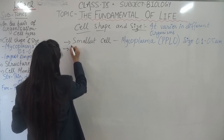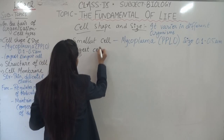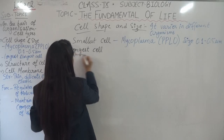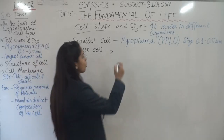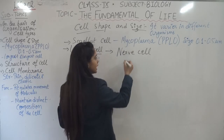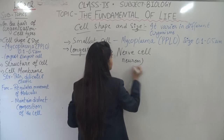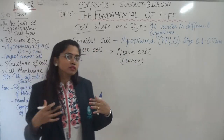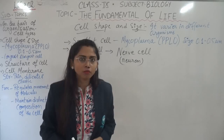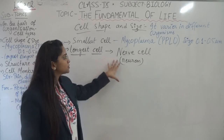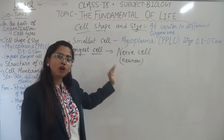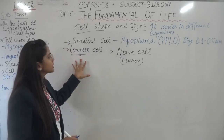Talking about the longest cell — the longest known cell is none other than the nerve cell, also called the neuron. These nerve cells are present in the body so that we can sense and communicate. It has been observed that nerve cells can be even 3 feet long. Such nerve cells exist — it is the longest cell.